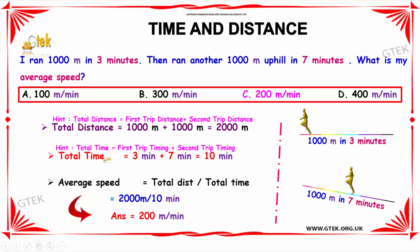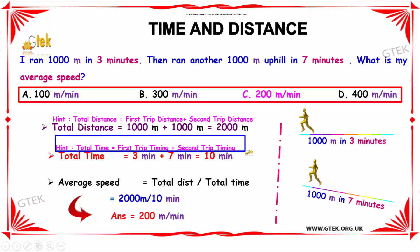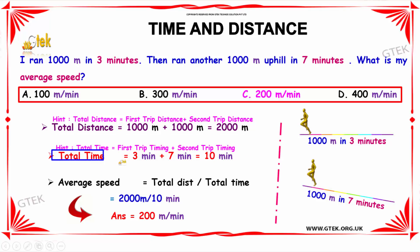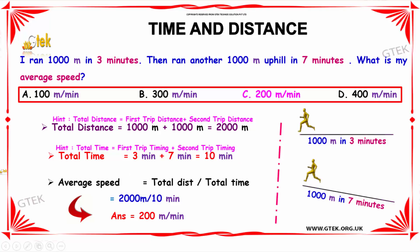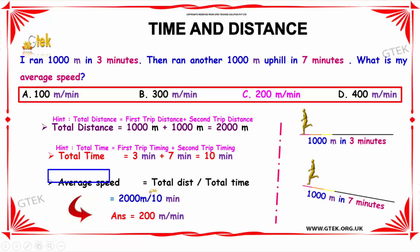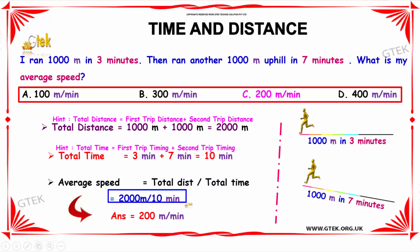And next, the total time equals the first trip time plus the second trip time, which is 3 minutes plus 7 minutes, which implies 10 minutes. Therefore, the average speed equals the total distance divided by the total time. Substituting the known values, we get 2000 meters divided by 10 minutes. Simplifying this, we get 200 meters per minute.